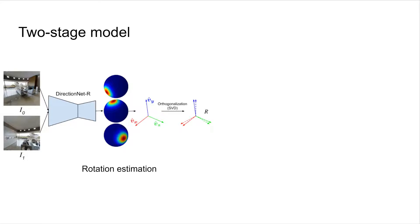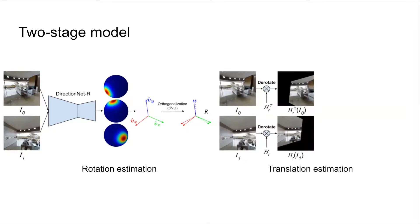To facilitate estimating the translation, we derotate the input images to cancel out the relative rotation between two views. Intuitively, we expect that learning camera translation should be easier when there is no rotation. So first, we use DirectionNet to estimate the relative rotation between input images. Then we use this rotation to derotate the images. Finally, we introduce a second DirectionNet to predict translations from the rotation-free image pair.